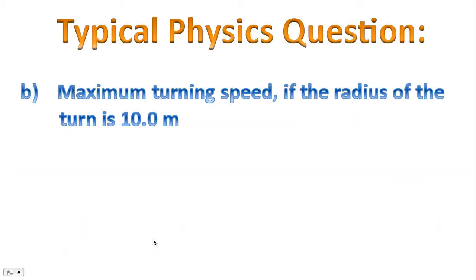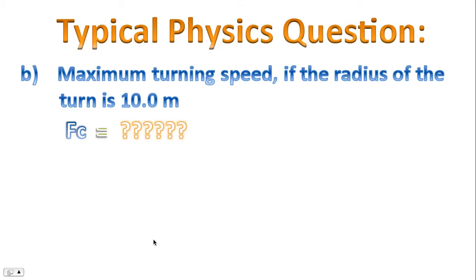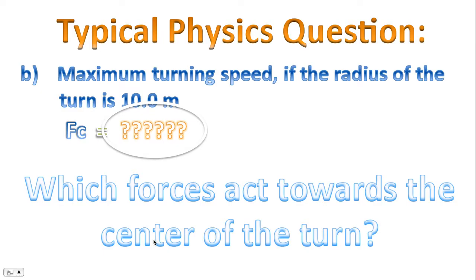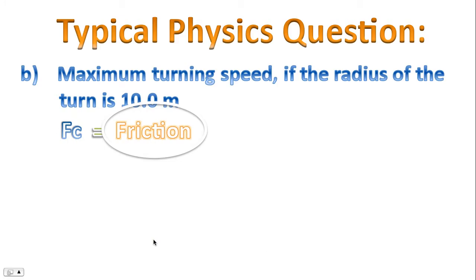Now let's focus on Part B — the maximum turning speed if the radius of the turn is 10 meters. For this, we need to write an Fc statement, a centripetal force statement. The question is: which forces assist the car in turning? Which forces act towards the center of the turn? Well, the only force that assists the car in this situation is friction.